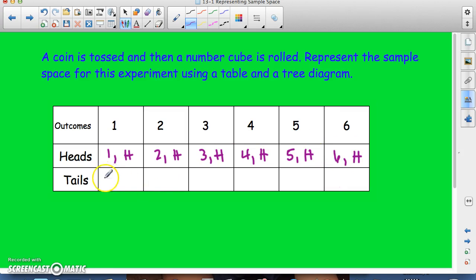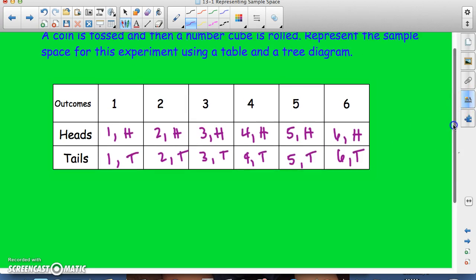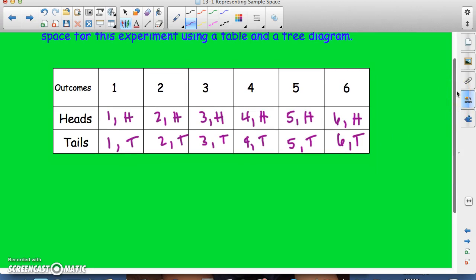And so your second row would be with tails. Now when you make your tree diagram, you're going to have your outcomes listed first.